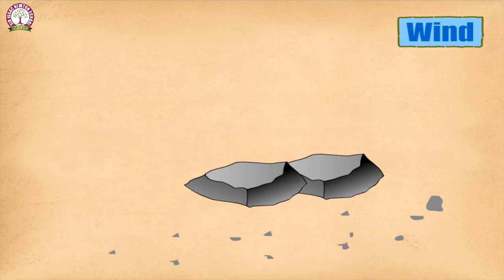Click the button to see how wind works on the rocks. The wind blows away smaller pieces of rock and further crumbles the rocks into finer sand.